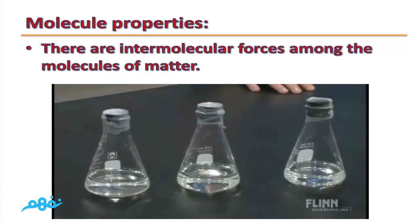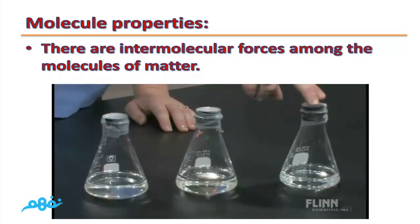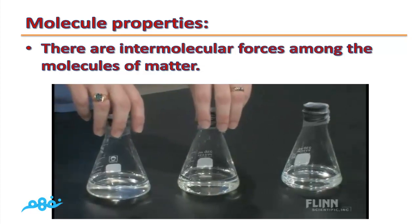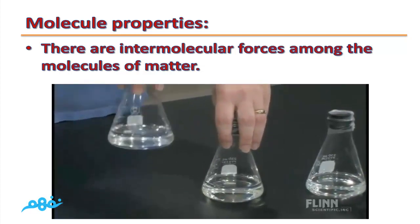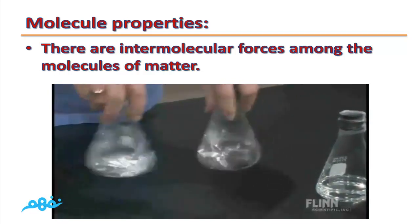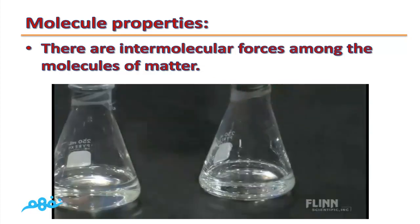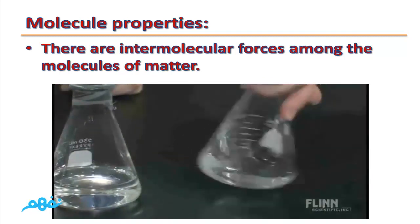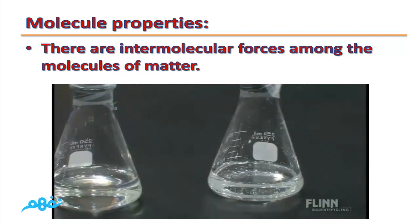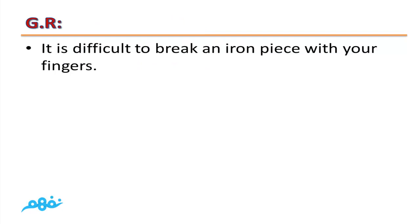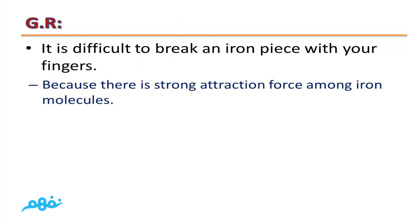We can do the same experiment in a different way: by preparing three cylinders that contain different liquids and trying to shake them strongly. We find that the one with greater intermolecular forces will settle down faster. Give reasons: It is difficult to break an iron piece with your fingers because there is a strong attraction force among iron molecules.